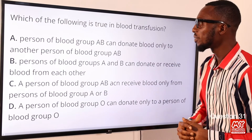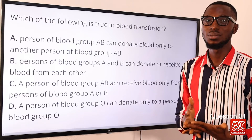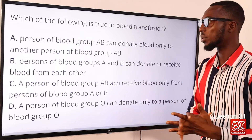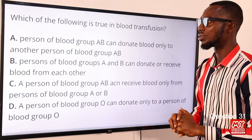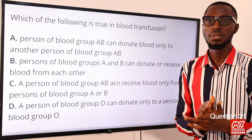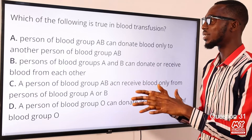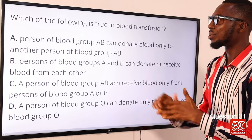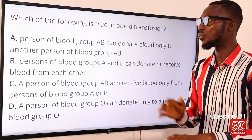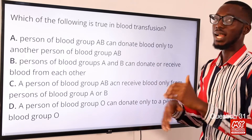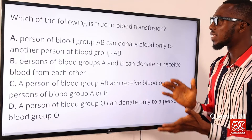Question 31. Which of the following is true in blood transfusion? Blood transfusion may be needed when there is an accident and the victim has lost a lot of blood, or during surgical operations. When you talk about the different blood groups — A, B, AB, and O — we look at the presence of antigens on the red blood cell and antibodies in the plasma. This accounts for clumping or agglutination once the blood groups are not compatible, due to the antigen from the donor and the antibody from the recipient.